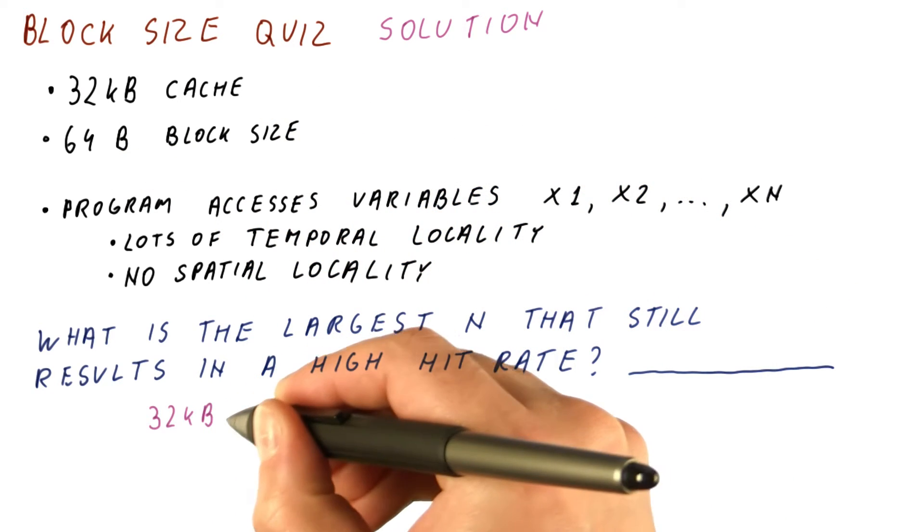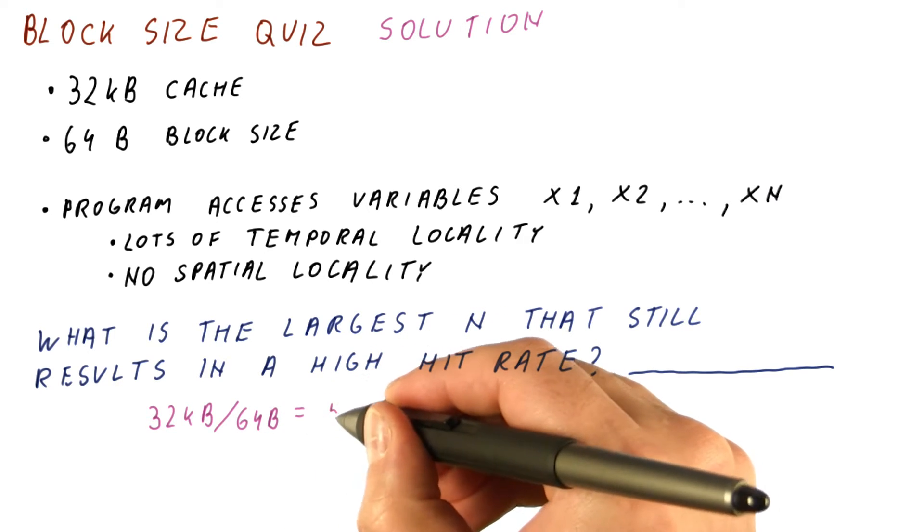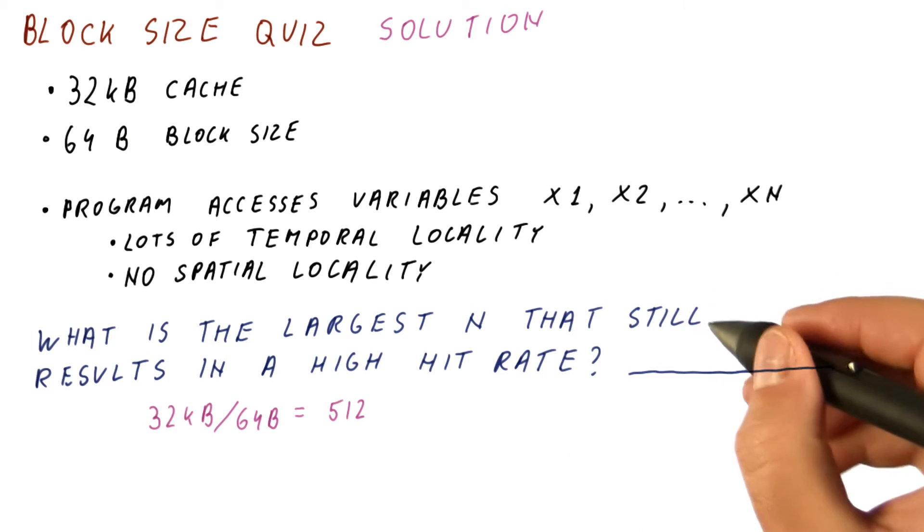So the answer is 32 kilobytes divided by 64 bytes, which gives us 512. So the answer here is 512.